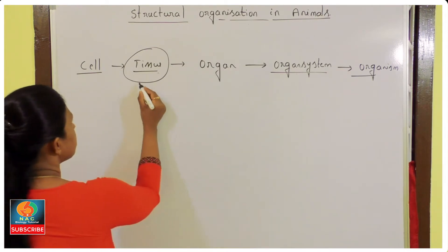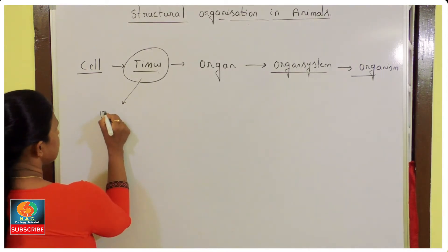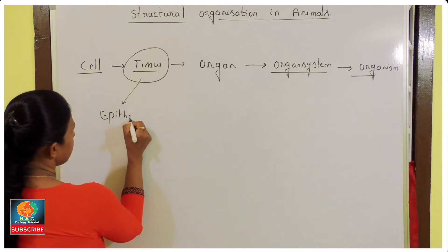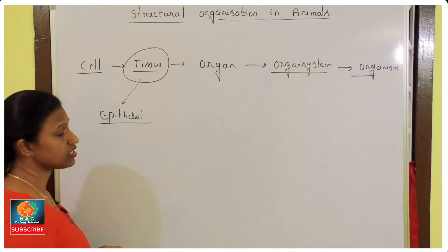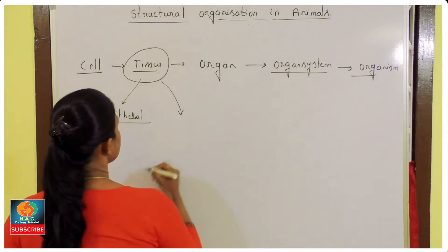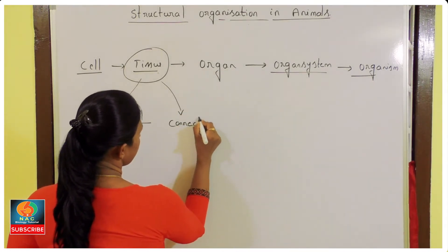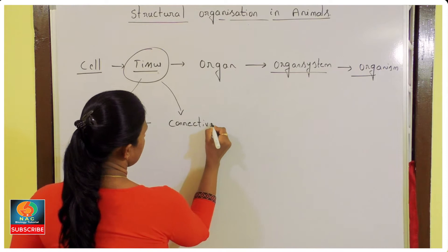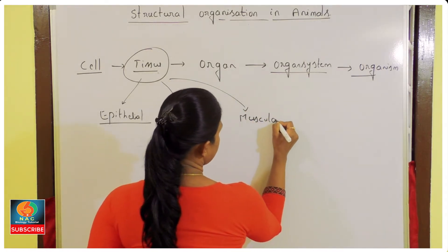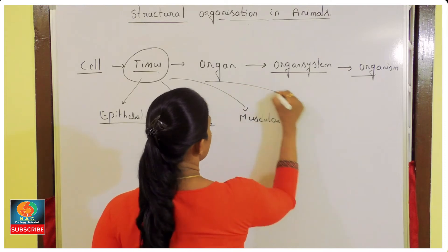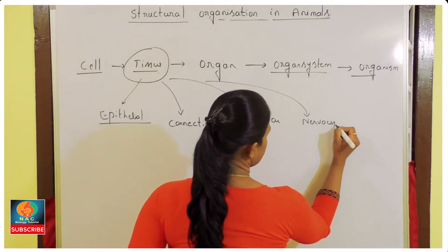Those four types of tissues are: epithelial tissue — which we call a covering tissue, that we are going to study today — connective tissue, muscular tissue, and nervous tissue.